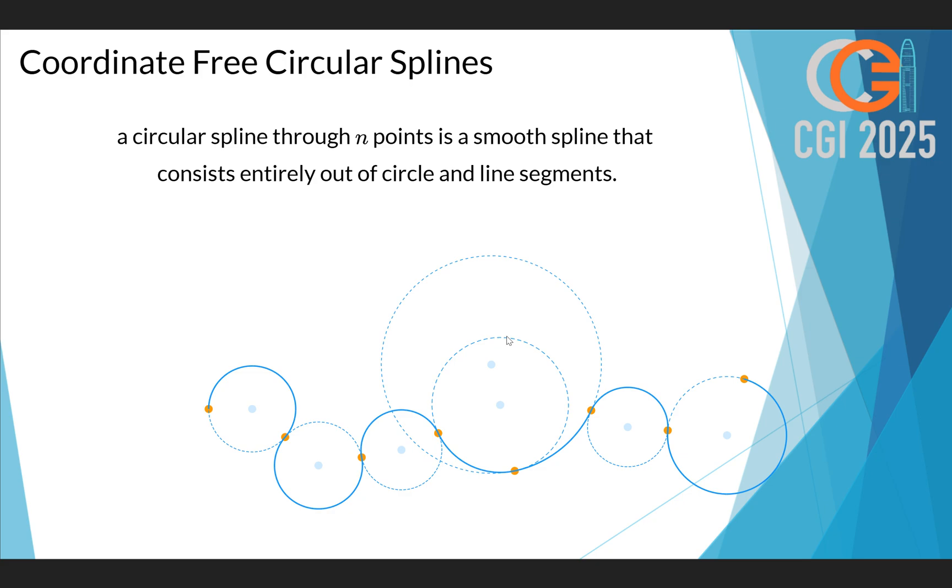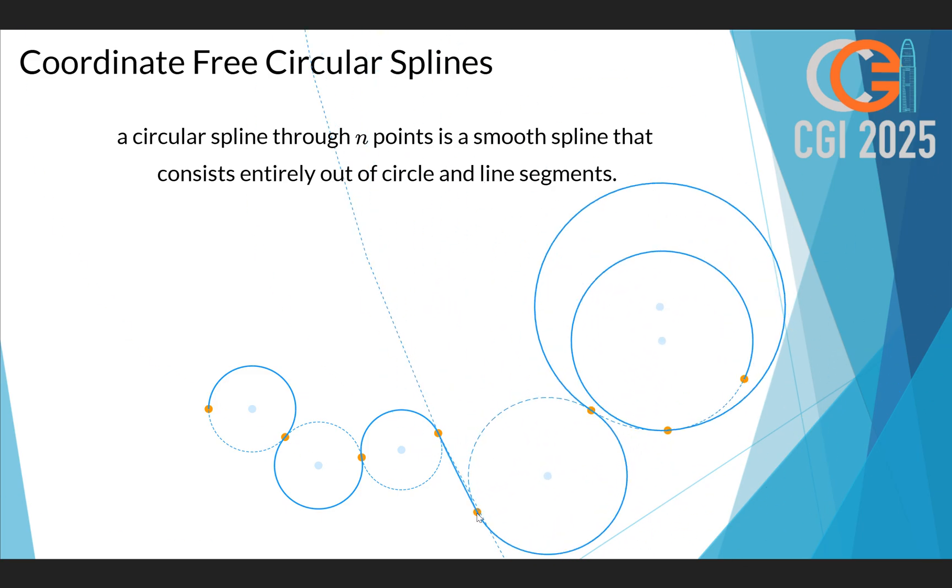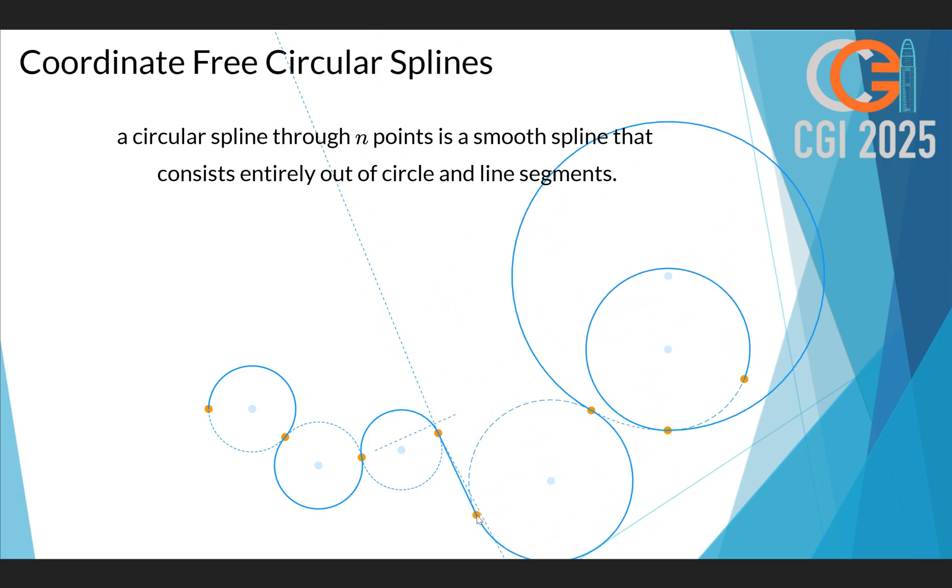A circular spline through n points, which are the orange points here, is a smooth spline that consists entirely out of circle and line segments. Circle segments were obvious. Let me make a little line segment.